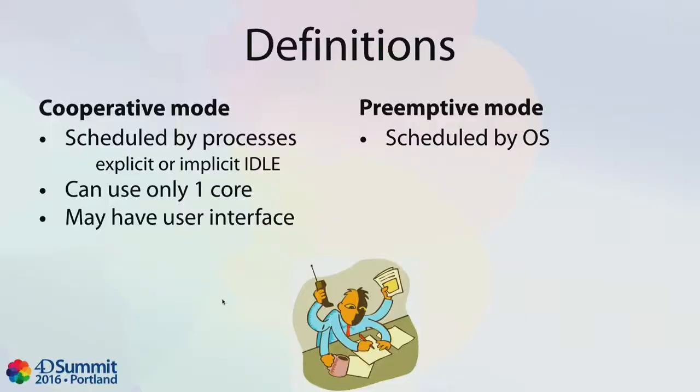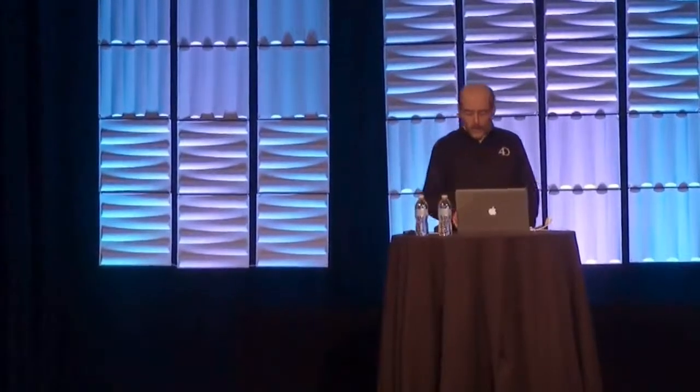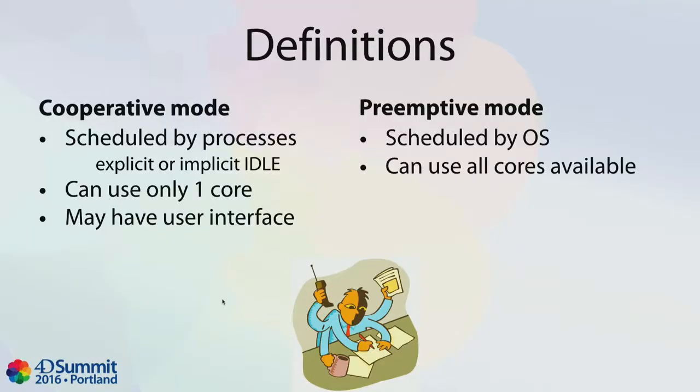In preemptive mode, you don't have to call the idle command because the 4D processes don't have to cooperate to share the CPU — it's done by the operating system. The operating system preemptively gives the CPU to one thread or the other. And if you have multiple CPUs in your machine, then more than one thread can execute at the same time.